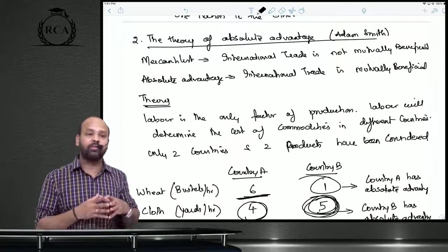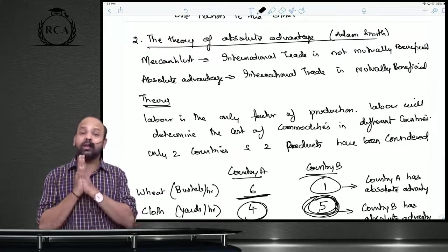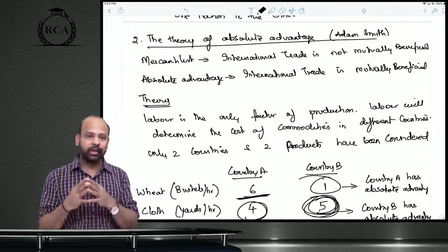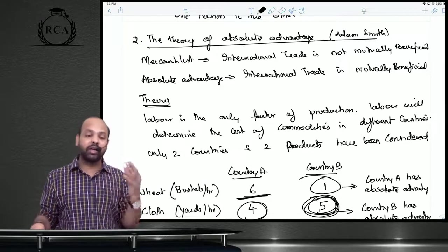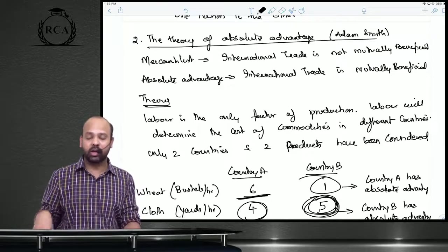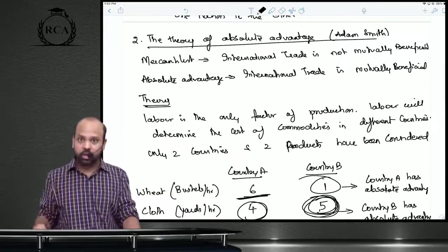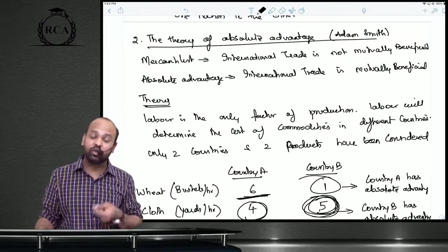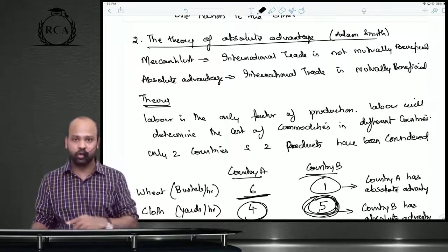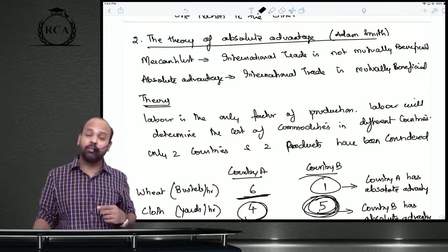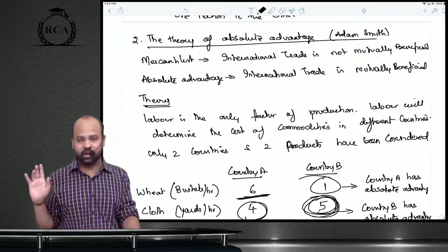The theory of absolute advantage, given by Adam Smith, states that international trade can be mutually beneficial. It depends on absolute advantage — one country may have an absolute advantage in producing one commodity, and another country in producing a different commodity. You must specialize in and export the commodity in which you have absolute advantage, meet domestic needs, and import the commodity in which you do not have absolute advantage.